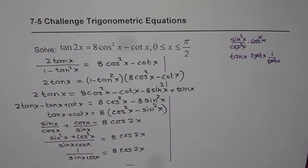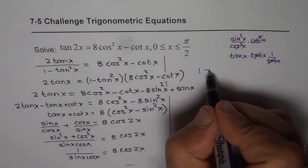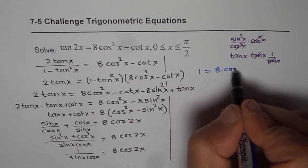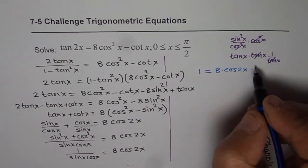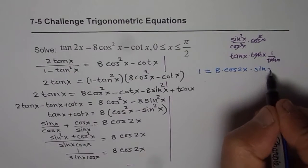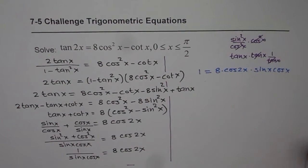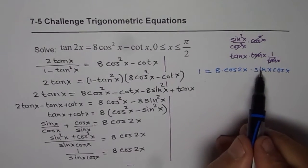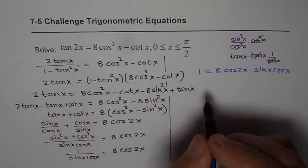1 over sine x cos x is 8 cos 2x, so let me write this as 1 equals multiplying here 8 times cos 2x times sine x cos x. I can write this 8 as 4 times 2, then we know 2 sine x cos x is sine 2x.